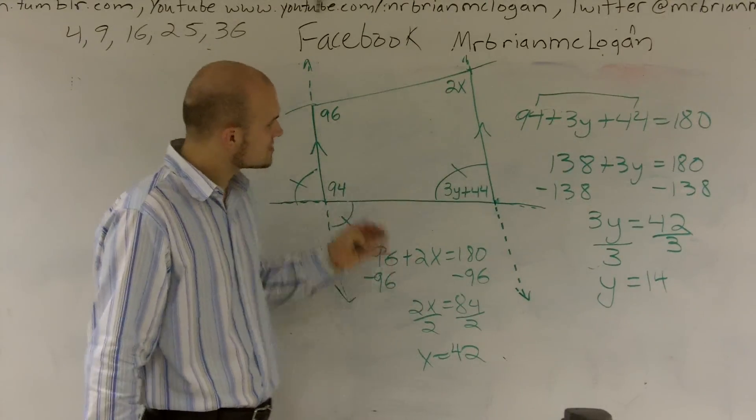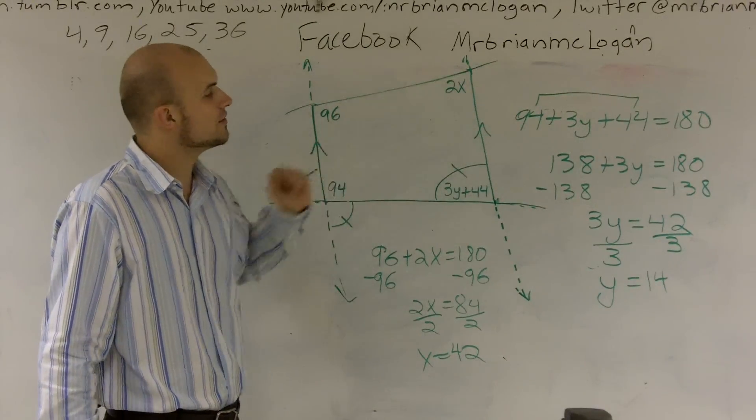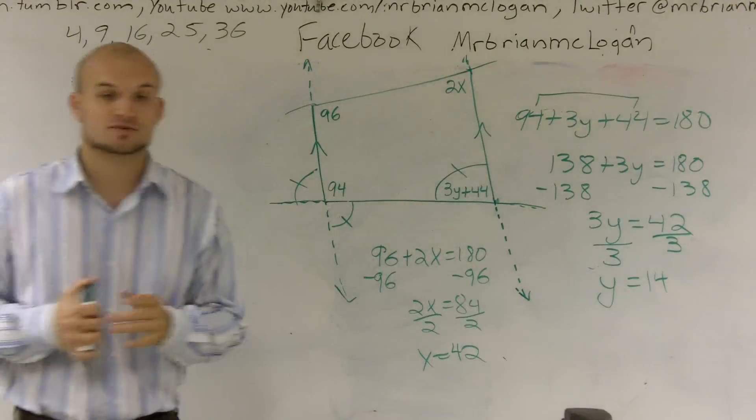So that's how you solve for two variables when given a quadrilateral with two different variables, but you have parallel lines and transversals.